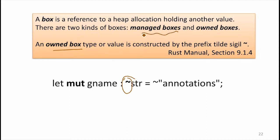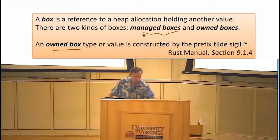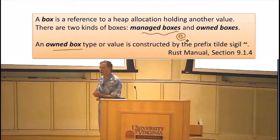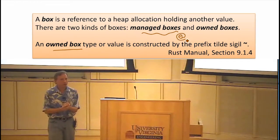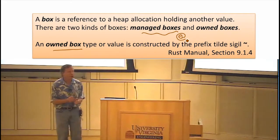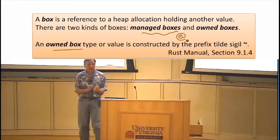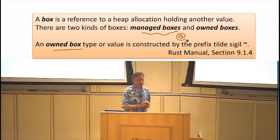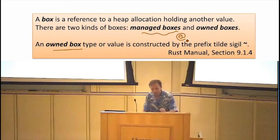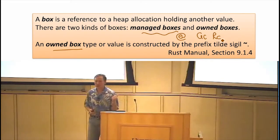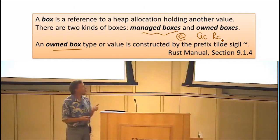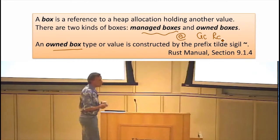Rust has managed boxes as well, and it's actually in 0.9 still supports the at symbol to give you a managed box, which is automatically garbage collected. That's actually going to be removed by 1.0, or it's expected to be removed. You should be able to implement any kind of managed storage that you want in Rust as a library, instead of anything built into the language. So there are both garbage collected and reference counted ways of doing storage that are part of the Rust library, but there's no reason you can't implement those yourself, starting with the explicitly owned boxes.